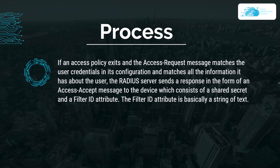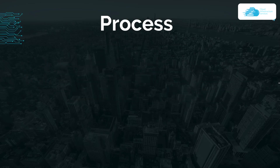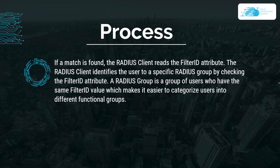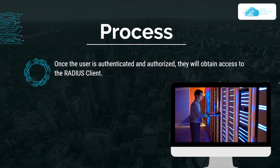The access accept message consists of a shared secret and a filter ID attribute, which is basically a string of text. The RADIUS server checks the shared secret — if there is no match, the RADIUS client rejects the message. If a match is found, the RADIUS client reads the filter ID attribute and identifies the user to a specific RADIUS group. A RADIUS group is a group of users who share the same filter ID value, making it easier to categorize users into different functional groups.